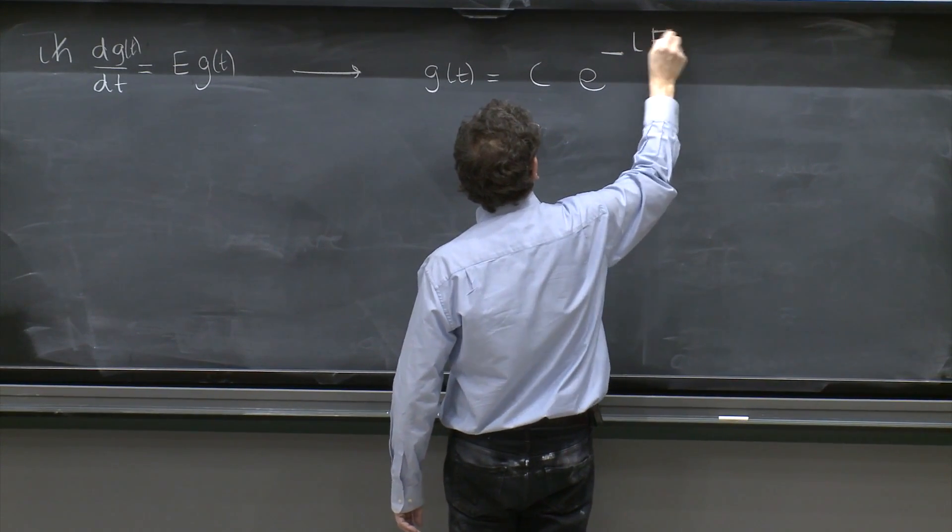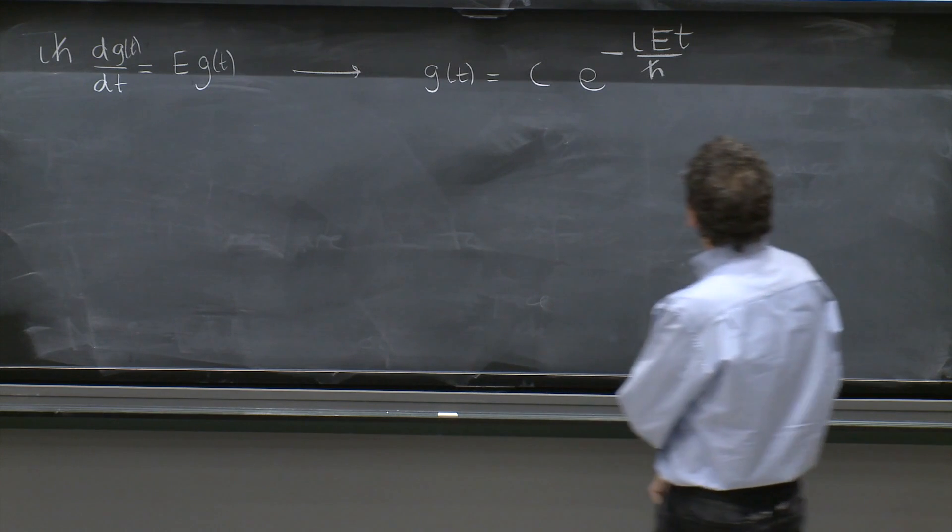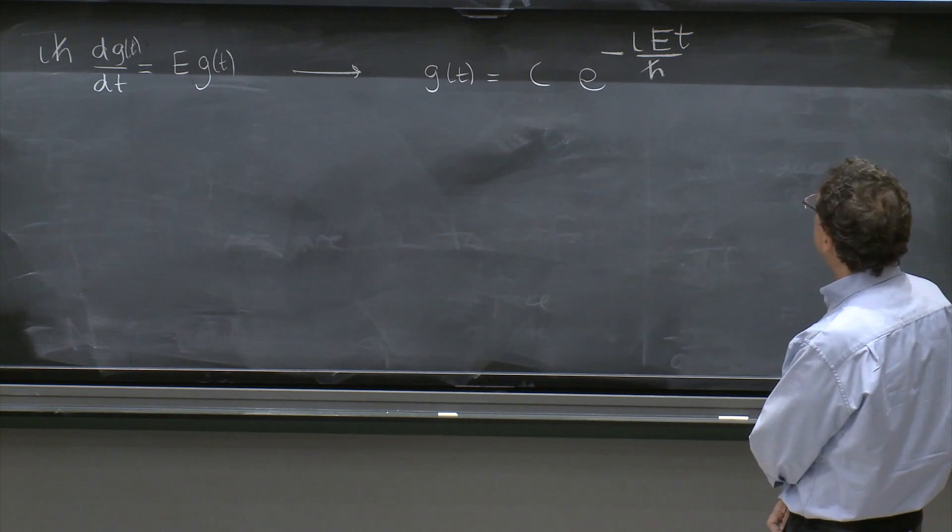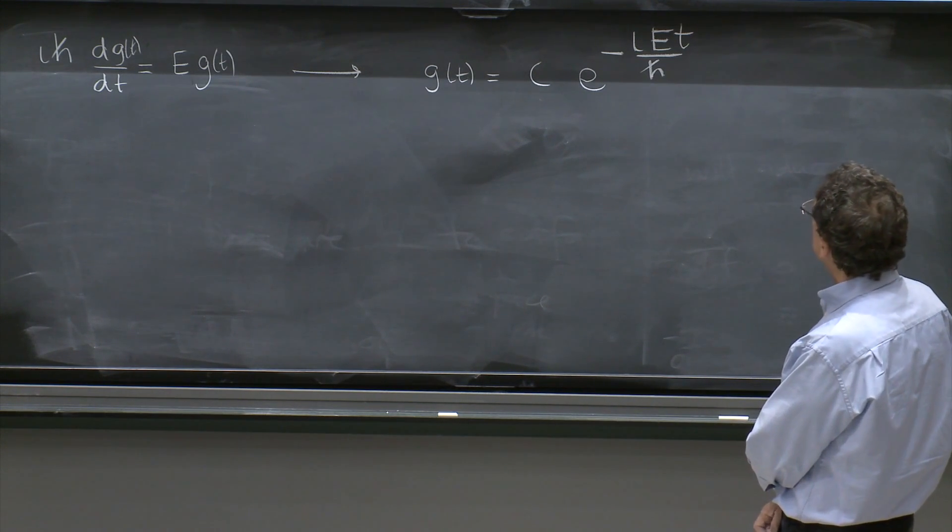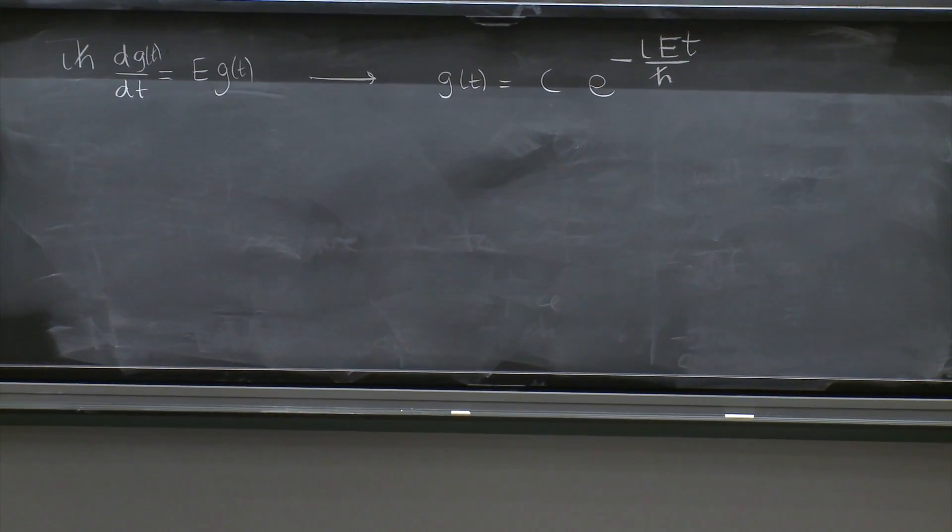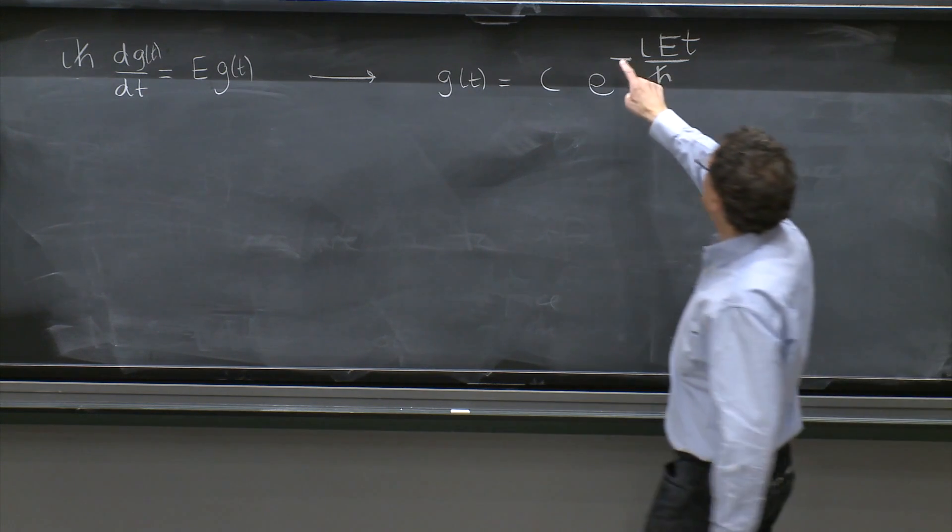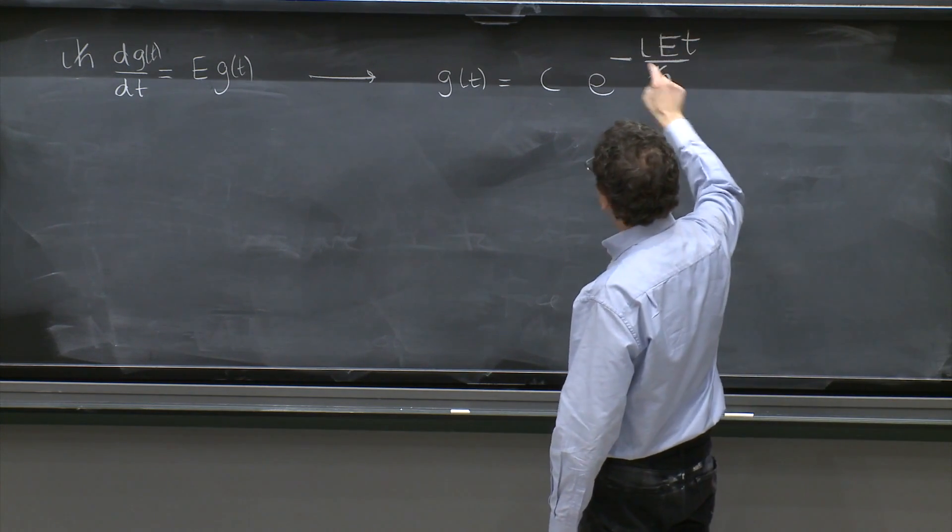From where g of t is equal to a constant, e to the minus iEt over h-bar. Let's just check. It works correctly. It's a first order differential equation, just one constant of integration. If you guess the answer, must be the answer. And that's the time dependence of a stationary state. It's exponential, minus iEt over h-bar.